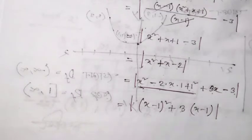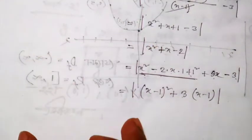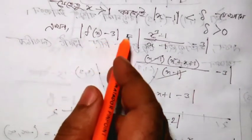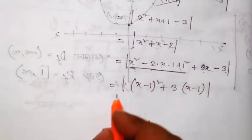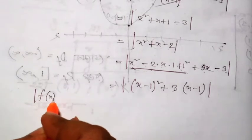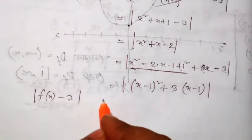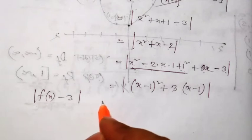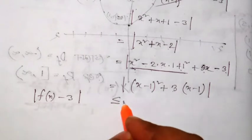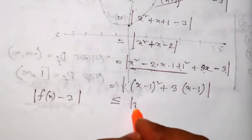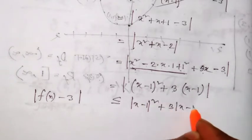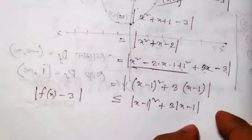So we have the modulus of x-cubed minus 1 over x minus 1 minus 3, which we write in terms of modulus x minus 1. Applying the triangle inequality, this is bounded by modulus x minus 1 whole squared plus 3 times modulus x minus 1.